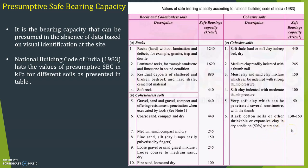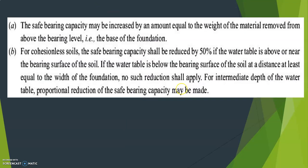These are guidelines for bearing capacity when no data is available. The safe bearing capacity may be increased by an amount equal to the weight of material removed from above the bearing level. For cohesionless soil, the SBC shall be reduced by 50% if the water table is above or near the bearing surface. If the water table is below the bearing surface at a distance at least equal to the width of the foundation, no reduction shall apply. For intermediate depth of water table, proportional reduction of SBC may be made.